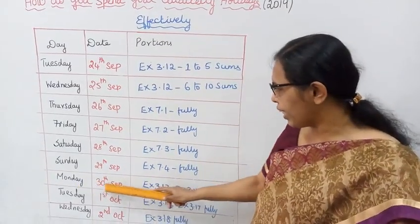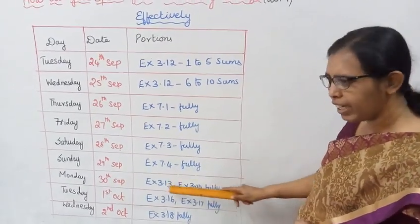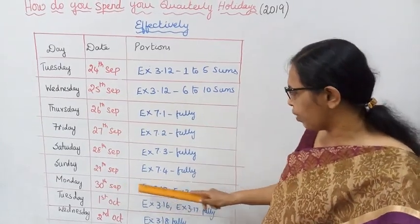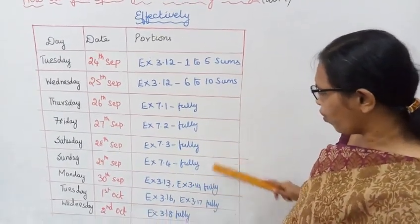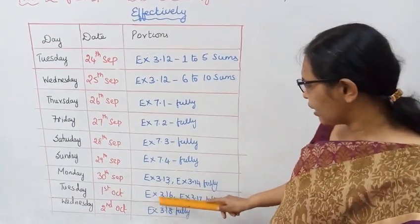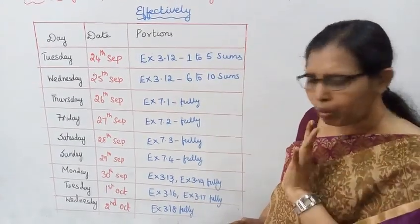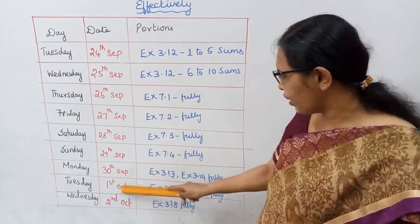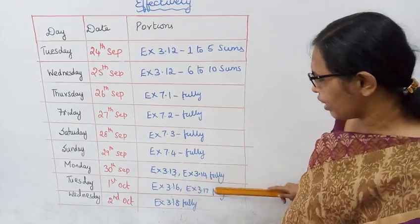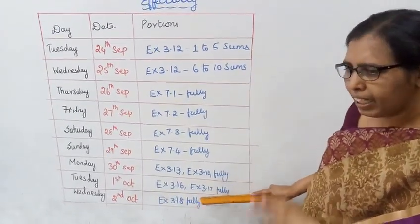Monday 30th September: Exercise 6.3.1, 6.3.13, and 6.3.14 fully — practice these. Tuesday 1st October: Exercise 6.3.16 and 3.1 — these are easy. The second term exercises, Exercise 3.1 fully — practice these sums.